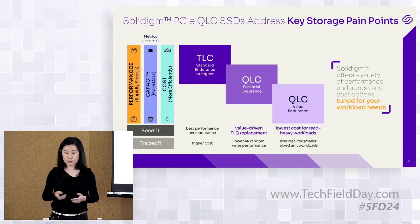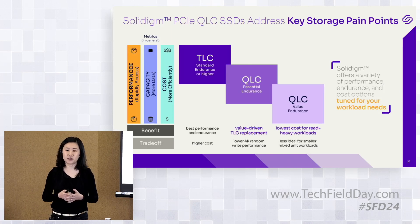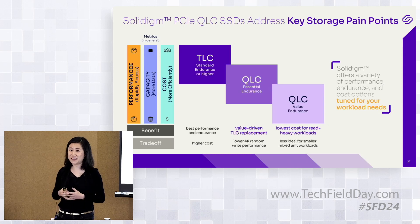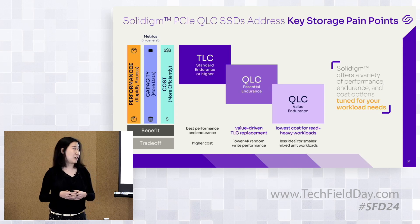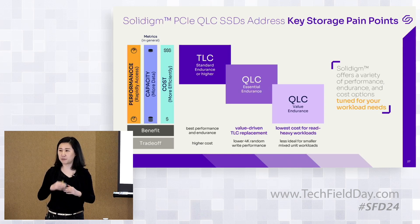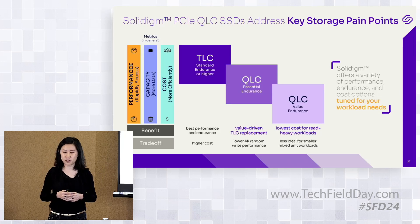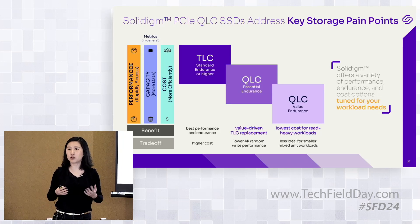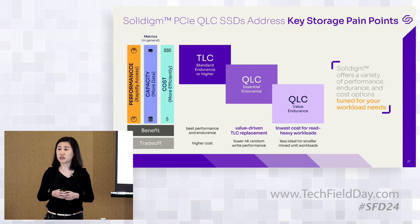I've talked about the PCIe interface. I haven't talked about SATA interface. For a TLC-based SATA SSD, the performance is capped by the interface, so at maximum you can get about 500 megabytes per second — that's about 10 times less than PCIe for read. And the dollar-per-gigabyte cost for TLC SATA-based SSD is not necessarily cheaper — it's sometimes more expensive than QLC.